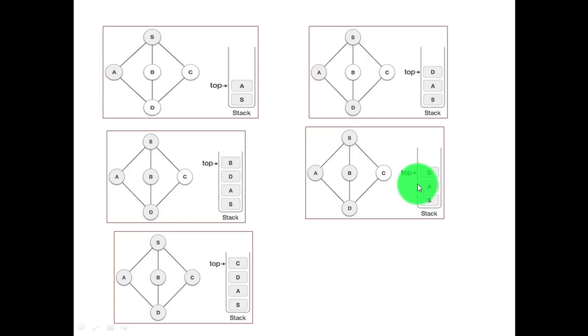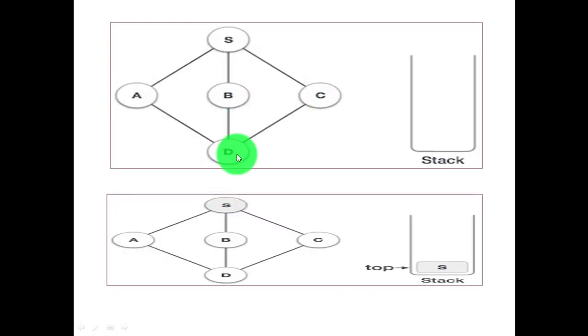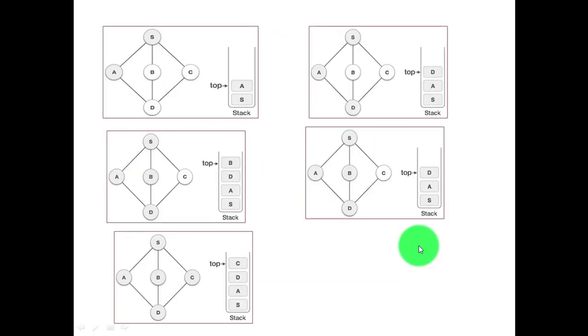D has another unvisited adjacent node C, so we'll push C here. When we reach C, you'll see that it doesn't have any unvisited adjacent node. So now we'll repeatedly pop up the elements until the stack becomes empty. First element that we popped up is B, then C, D, A, S. B, C, D, A, S—this is our Depth First Traversal of the graph. Clear?